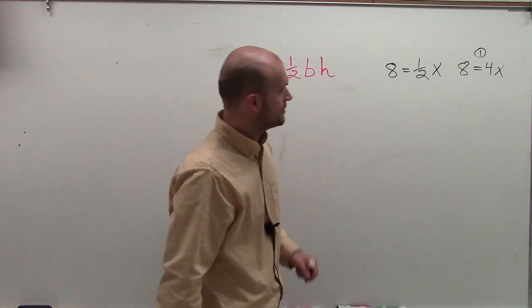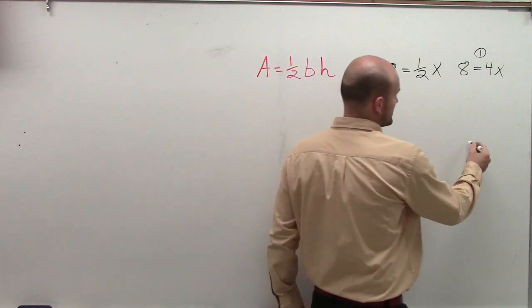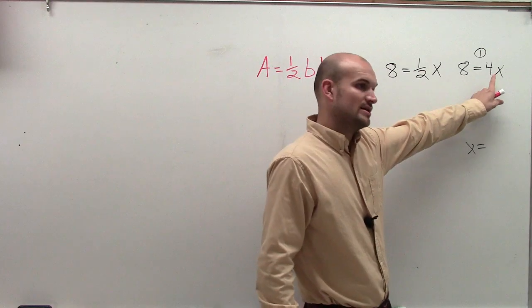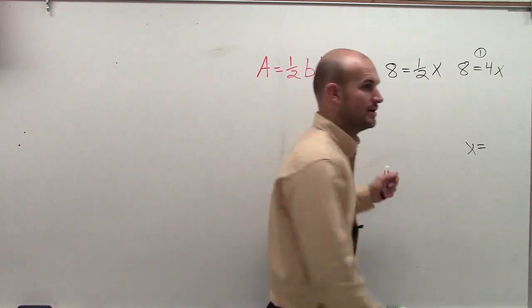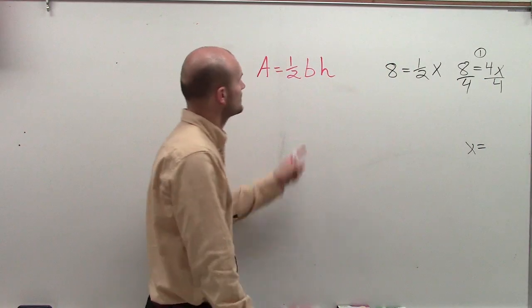So what do you do here to solve for x? Well, remember, we're undoing. Our whole goal is to get x by itself. So we need to get rid of that multiplication by 4. So we need to undo it. So we're going to divide by 4 on both sides.